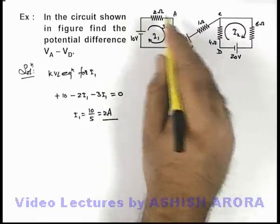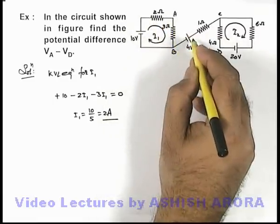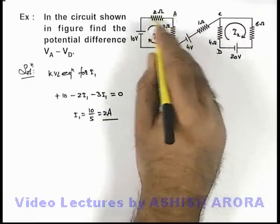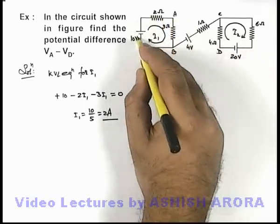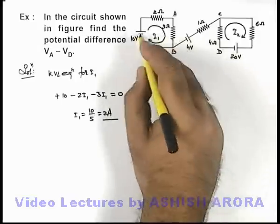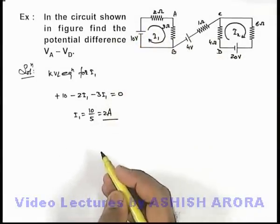Now in this loop there is no return path so no current will flow through the branch. And we can say this 2 ohm and 3 ohm resistances are connected in series across a 10 volt battery, so current will be 10 by 5, that is 2 ampere, directly we can obtain.